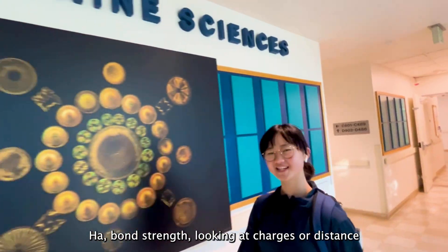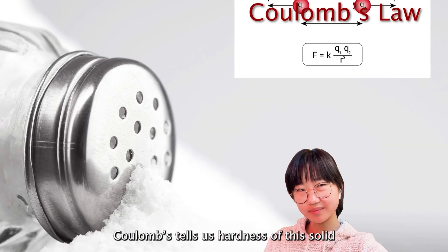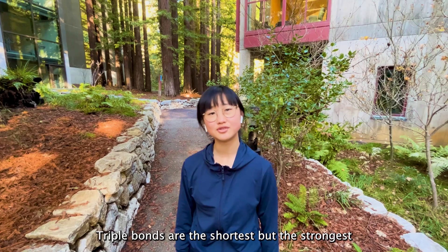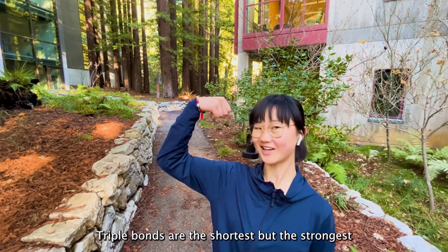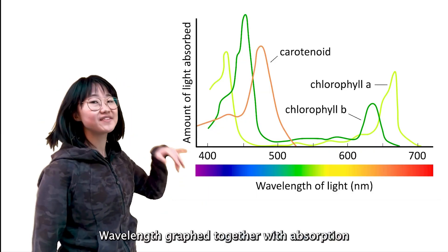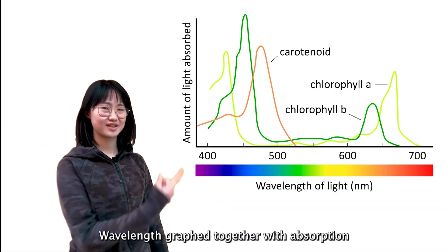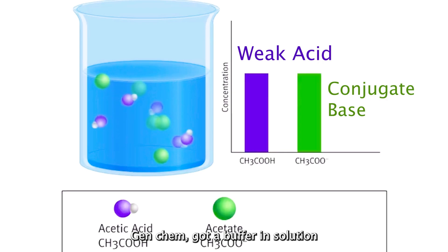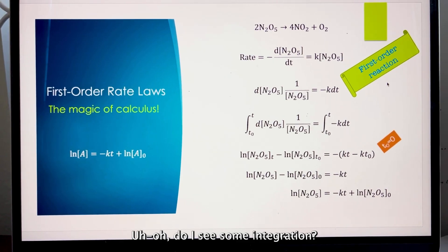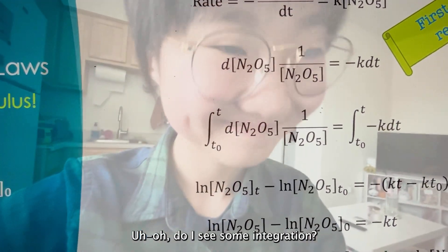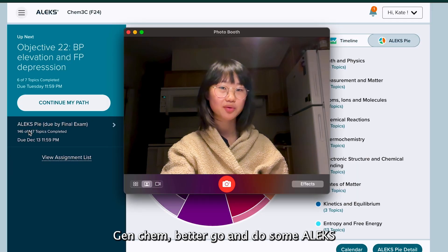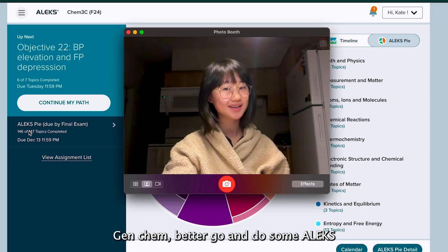Bond strength — looking at charges or distance. Coulomb's law tells us the hardness of the solid. Triple bonds are the shortest but the strongest. Wavelength graphed together with absorption. Gen Chem: got a buffering solution. Do I see some integration? Rate laws relate time and concentration. Gen Chem — better go and do some practice.